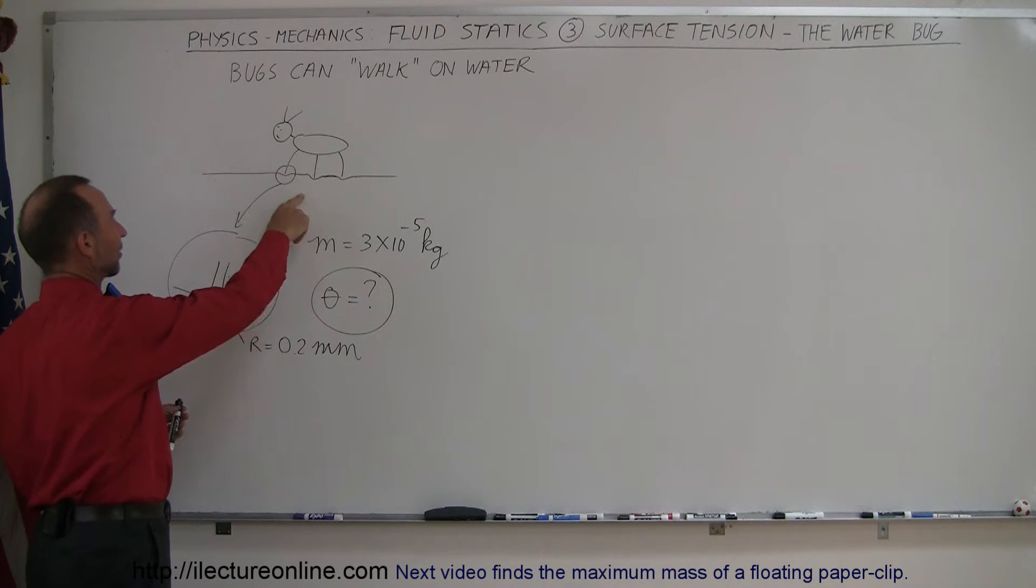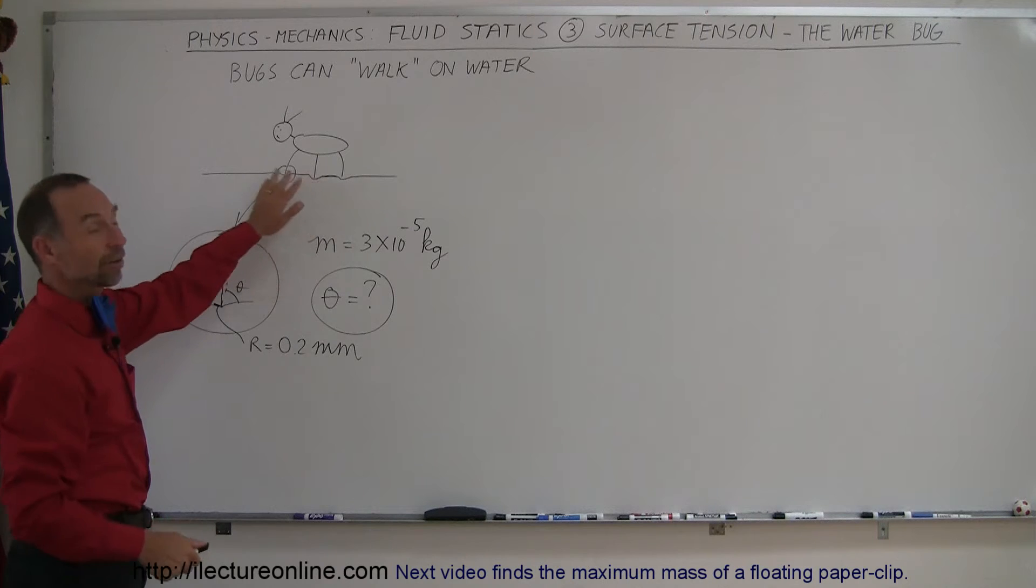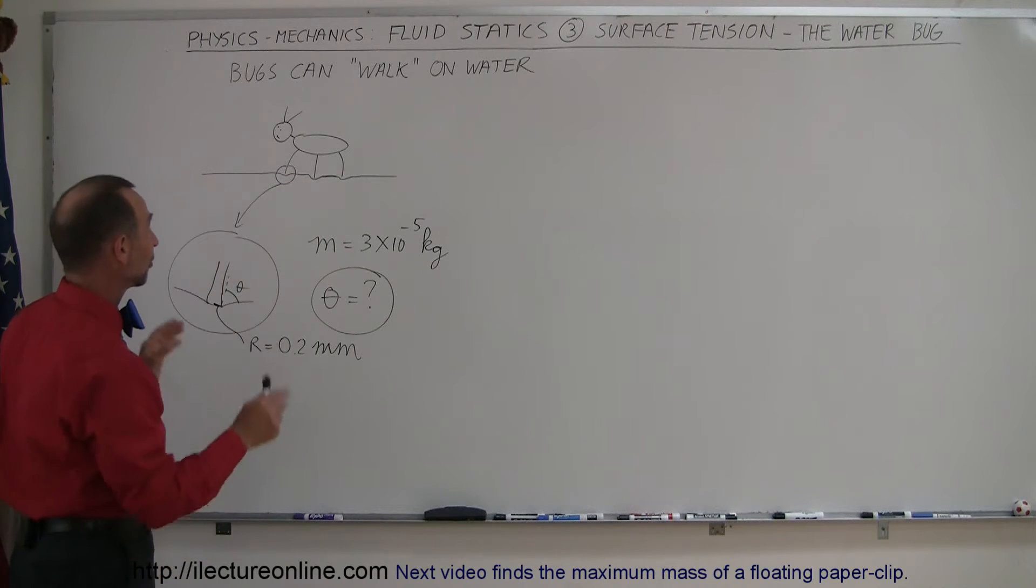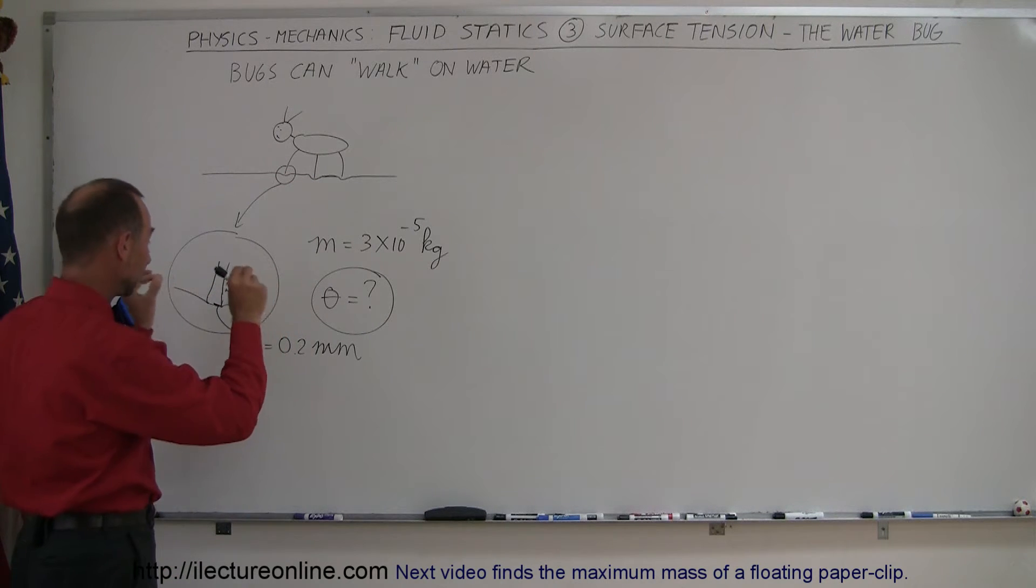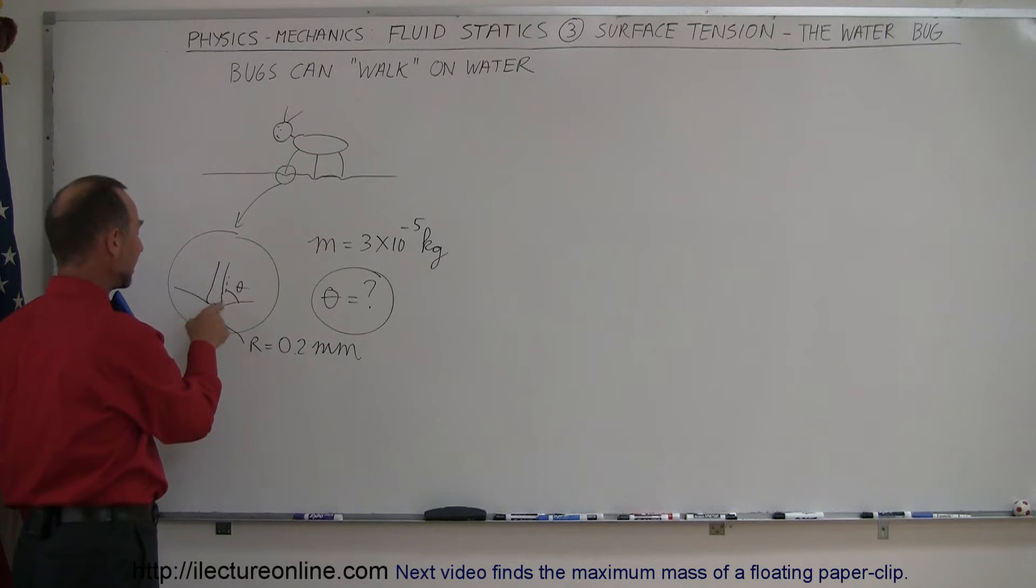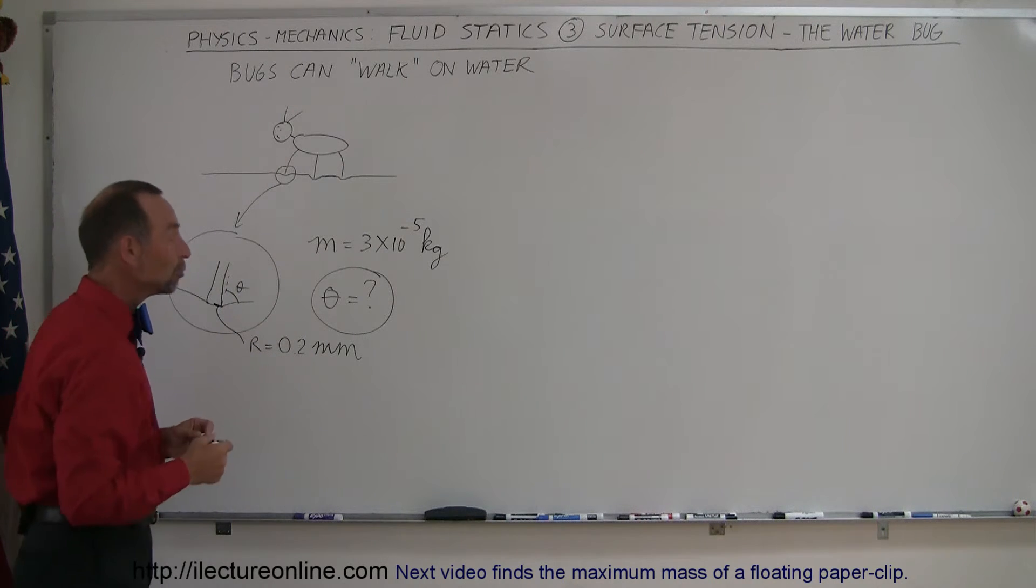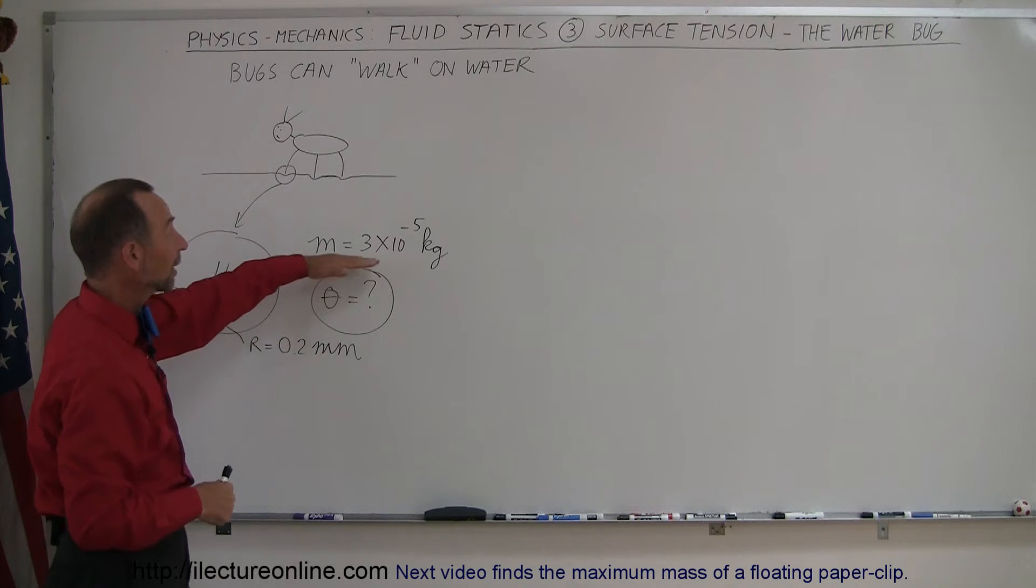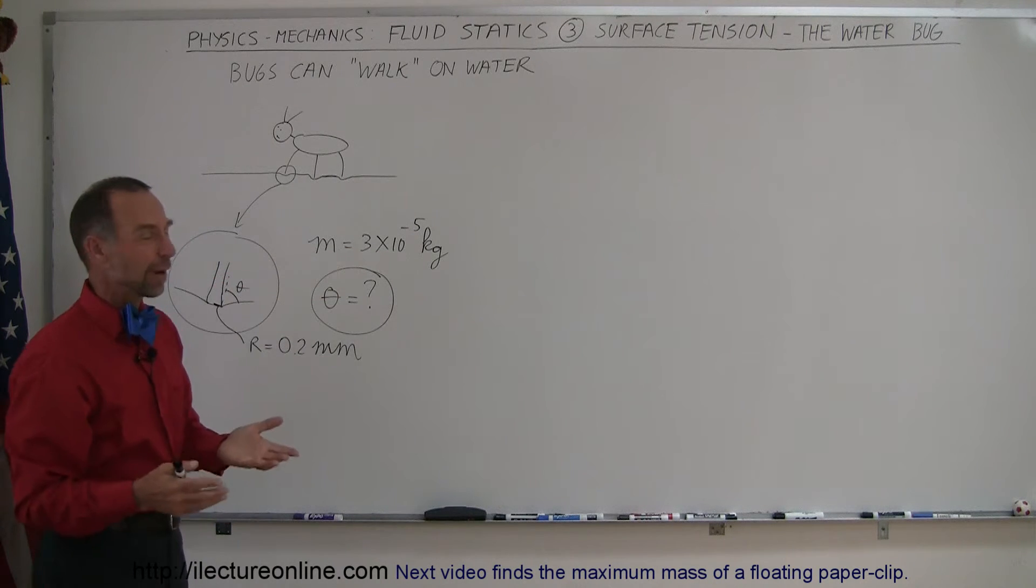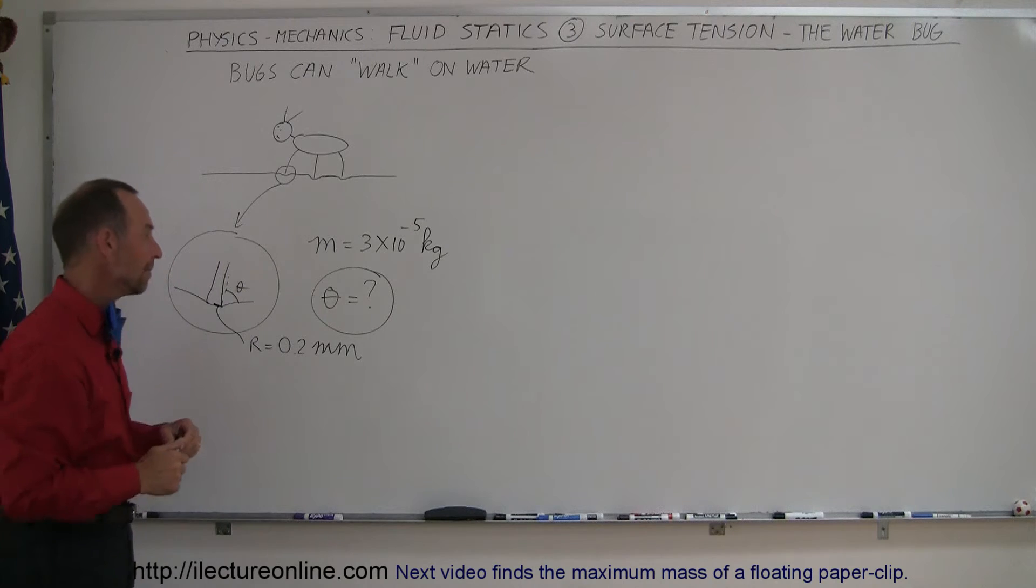Now let's take a look at our fantastic little bug here. I've only drawn three legs. Bugs usually have six legs. So assume that the bug has six legs standing on the water and let's say that each leg, the bottom of the foot, is circular in size and that the radius is 0.2 millimeters. Let's say the mass of the bug is 3 times 10 to the minus 5 kilograms, which is a very small fraction of a gram.